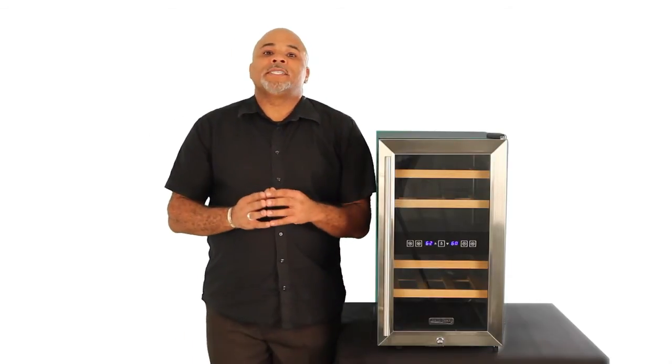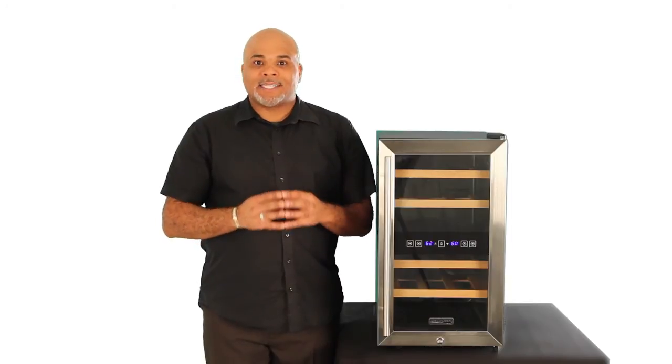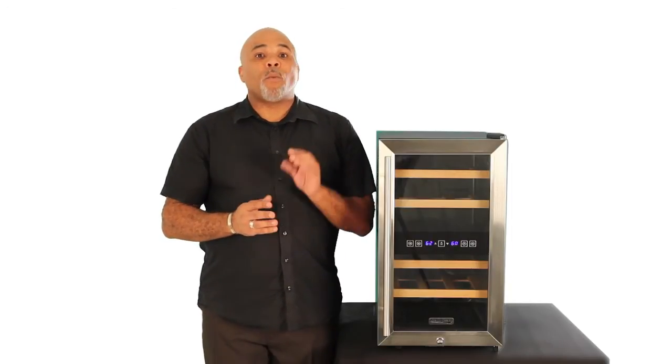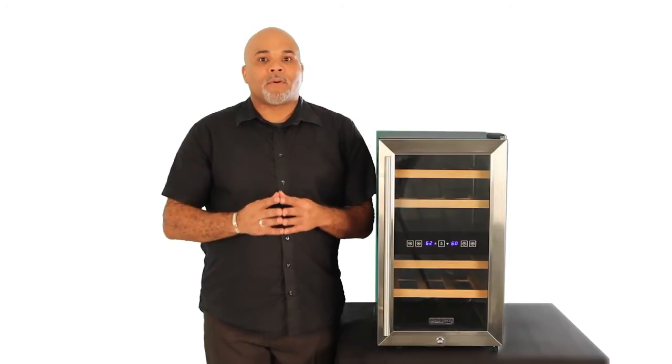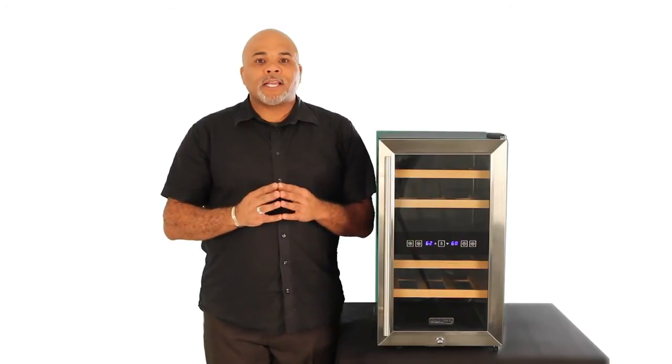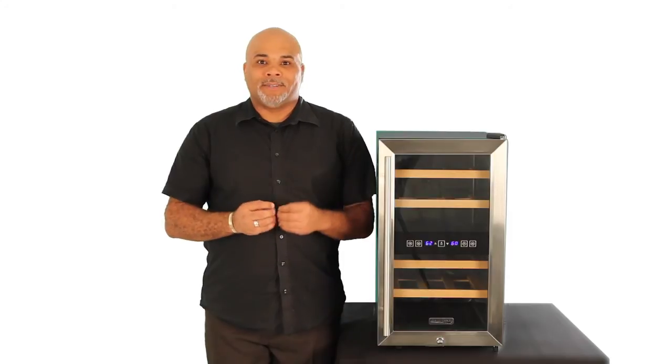Finally, the Coldfront TWR 187ESS plugs into a standard 115-volt outlet. That's just any household three-prong plug. It uses 110 watts and 1.0 amps.